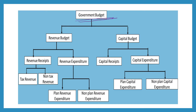The government budget has two components, or is divided into two budgets. One is the revenue budget, another one is the capital budget. The revenue budget has two components: revenue receipts and revenue expenditure. The capital budget has two components: capital receipts and capital expenditure.